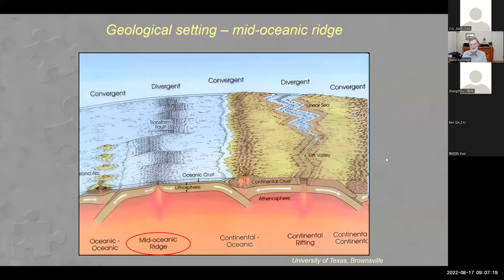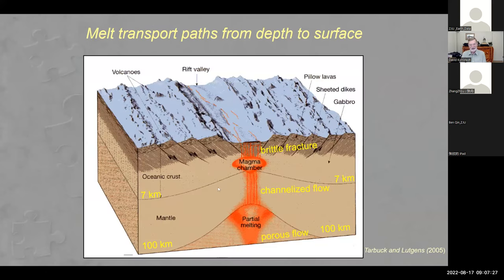I'm going to focus on the transport from deep to shallow depths. Very deep, at around 100 kilometers or so, melting begins — maybe just one percent melt or less. That melt somehow rises and ends up in a magma chamber. At the top, we know quite a bit because you can observe rocks deformed by melt injection — brittle fracture occurs at low pressures and temperatures, with magma hydro-fracturing its way through rocks forming dikes. At the lowest part, porous flow occurs. But most of my work has been in the intermediate section where some sort of channelized flow must occur.